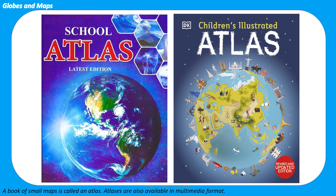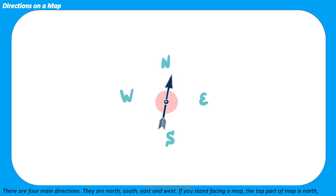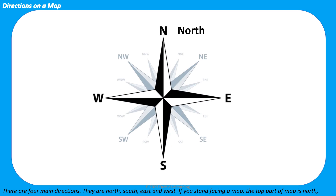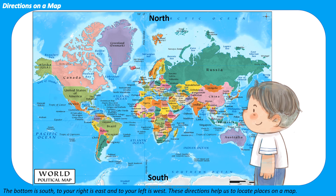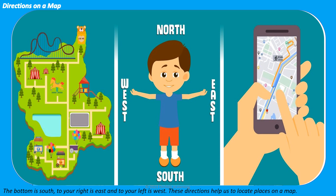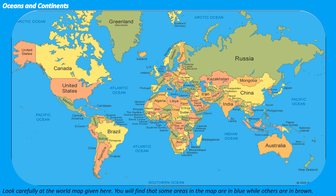Atlases are also available in multimedia format. There are four main directions: they are north, south, east, and west. If you stand facing a map, the top part of the map is north, the bottom is south, to your right is east, and to your left is west. These directions help us to locate places on a map.